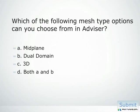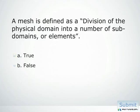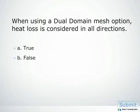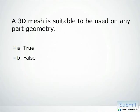Which of the following mesh type options can you choose from in Advisor? A mesh is defined as a division of the physical domain into a number of subdomains, also known as elements — true or false? The dual domain mesh option is intended for thin-walled parts — true or false? When using a dual domain mesh option, heat loss is considered in all directions — true or false? A 3D mesh is suitable to be used on any part geometry — true or false?